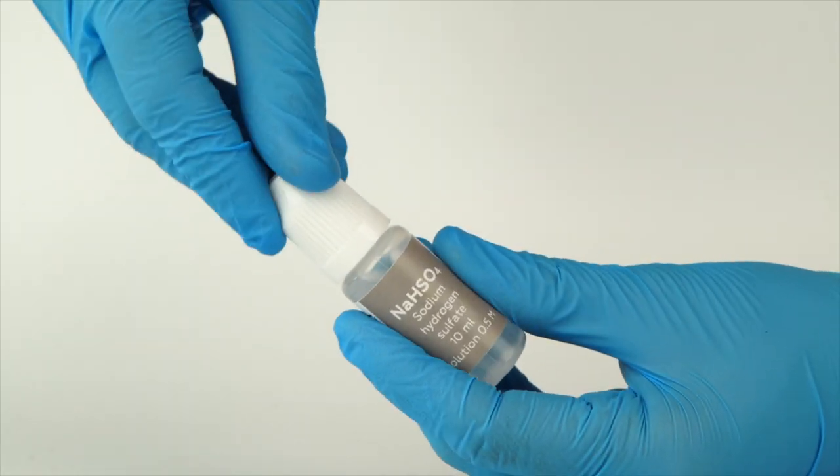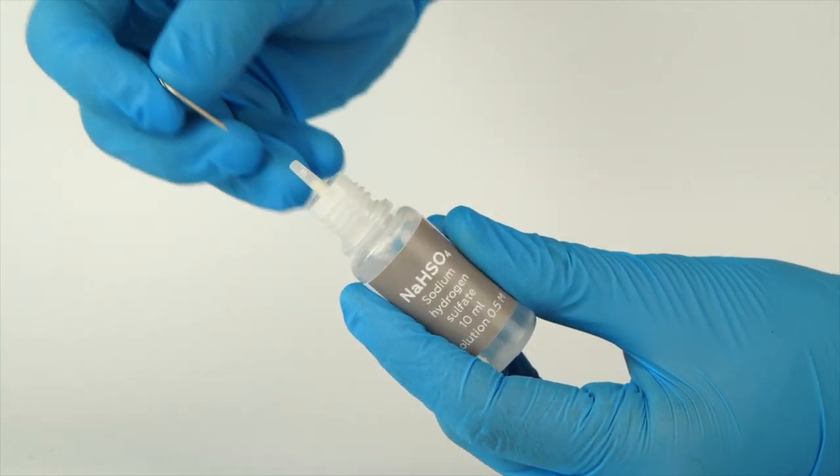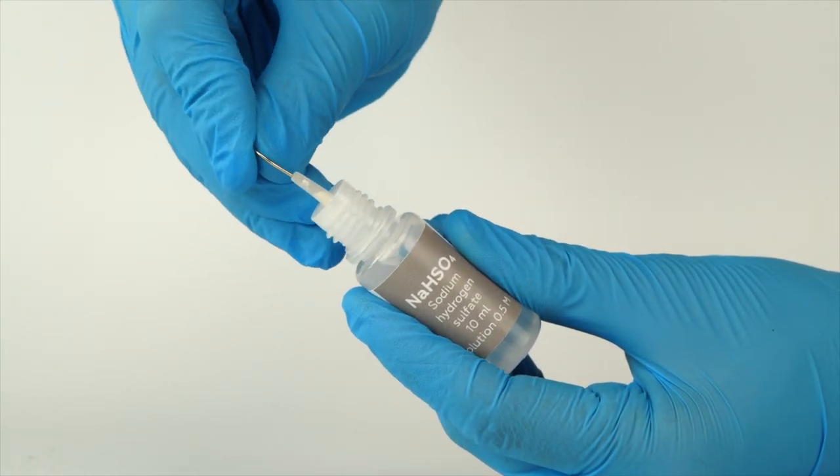To open a bottle containing a reagent, push the cap down and turn it. Pierce the bottle nozzle with an unbent paper clip.